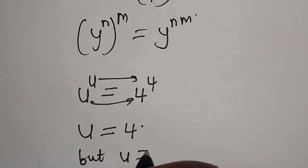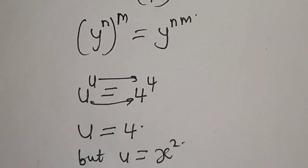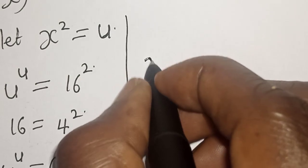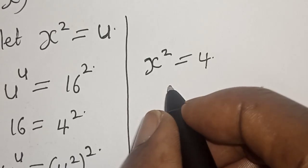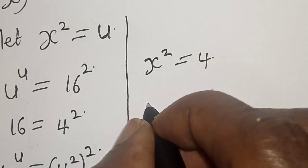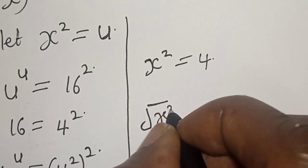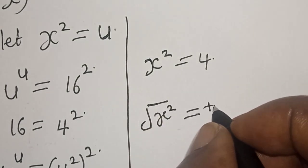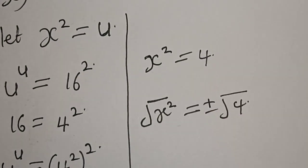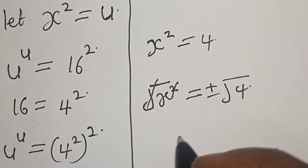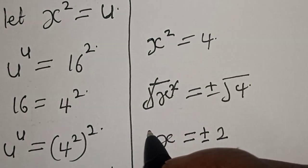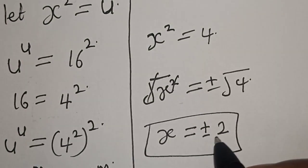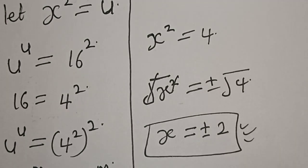But u is equal to s squared. Now s squared is equal to 4. Let's take the square root of both sides. We have square root of s squared is equal to plus or minus square root of 4. This simplifies to s is equal to plus or minus 2. That is our final answer.